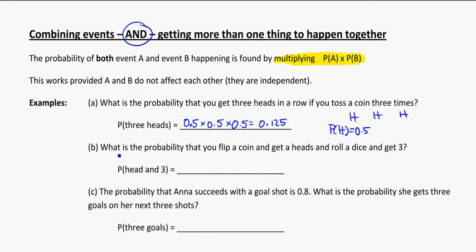Looking at the next problem, what is the probability that you flip a coin and get a head and roll a dice and get a three? So we flip a coin and get heads, and then roll a dice and get a three. A head and a three. Well, what's the probability of getting a head? That's a half. And the probability of getting a three when you roll a dice—that's one out of six.